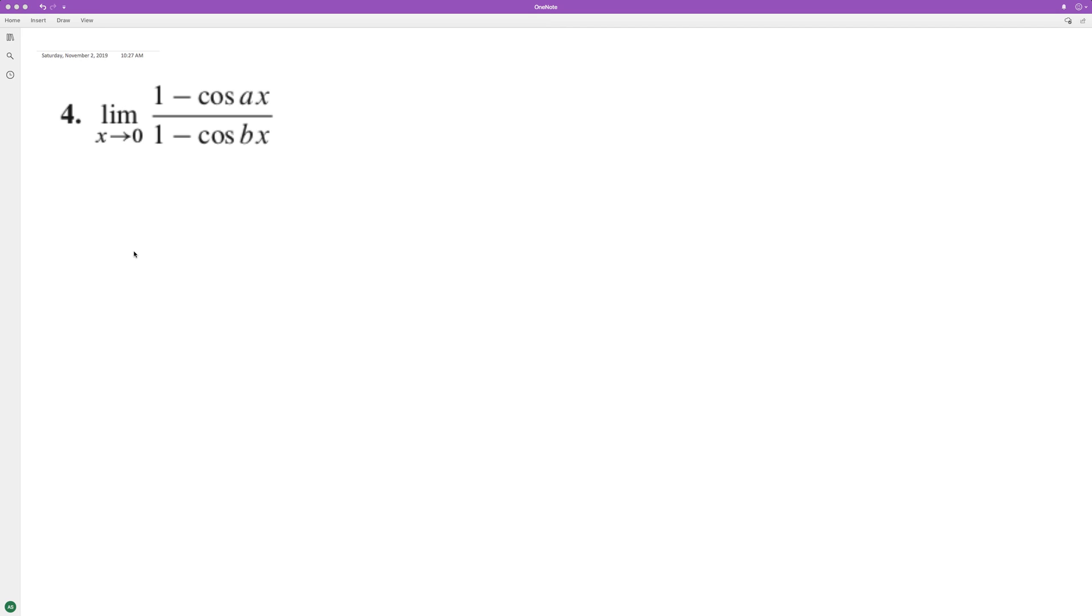I'm the limit of this statement when x approaches 0. So first off, if we plug that in, we get 1 minus the cosine of 0, because a times x when it's 0 is just 0, and then 1 minus cosine of b times 0 is 0.